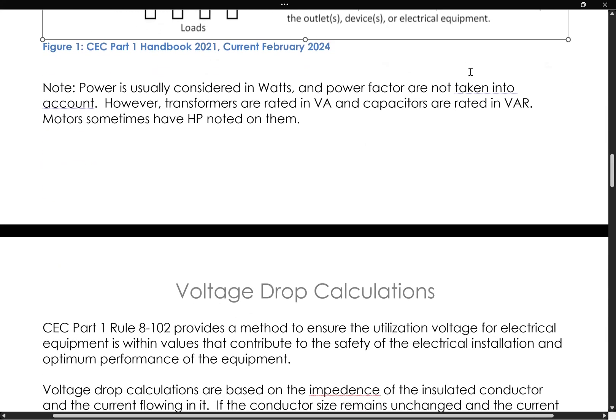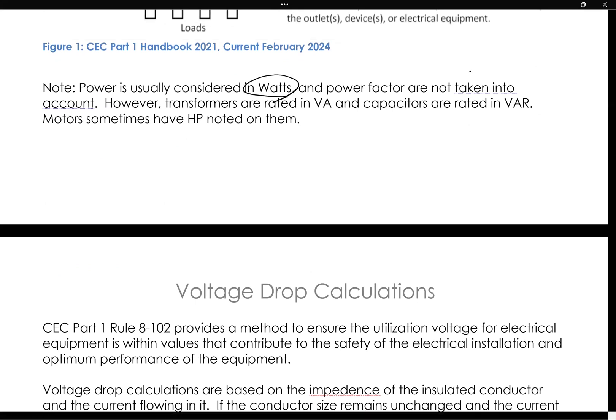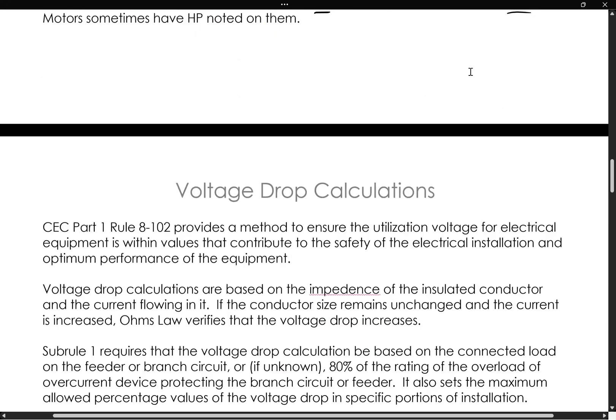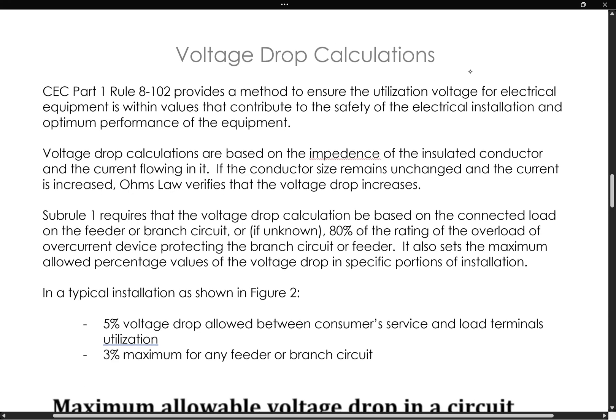It's worthwhile to note that power is usually considered in watts for these calculations, and we don't take into account the power factor for these calculations. We get the system up and running before you take a look at the power factor. Don't forget, though, that some equipment is not going to show watts on the nameplate. You're going to see volt amps for transformers, you're going to see volt amps resistive for capacitors. Motors sometimes are even rated with horsepower on them, which you can readily convert from.